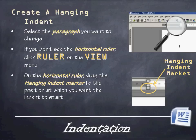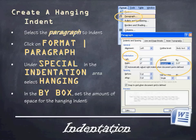If you want to create a hanging indent, select the entire paragraph by highlighting it. If you don't see the horizontal ruler, click on Ruler under the View menu. On the horizontal ruler, drag the hanging indent marker — the bottom arrow of those arrows on the ruler — to the position where you want the indentation to start. The hanging indent applies to the text underneath your first line. If the ruler marker is too finicky, go to Format, then Paragraph, and under Special in the indentation area, select Hanging. Then in the By box, set the amount of space — the number of inches from the margin.